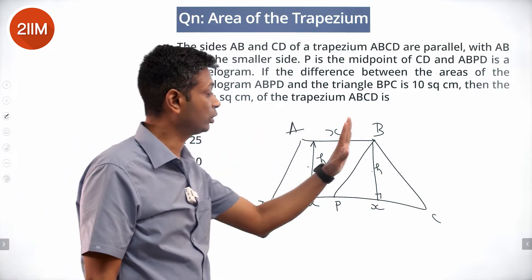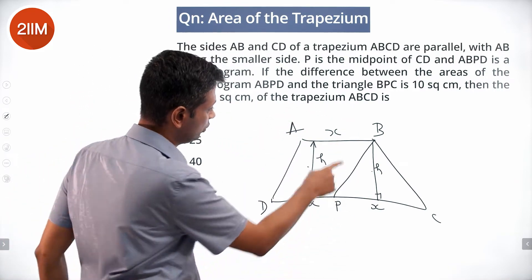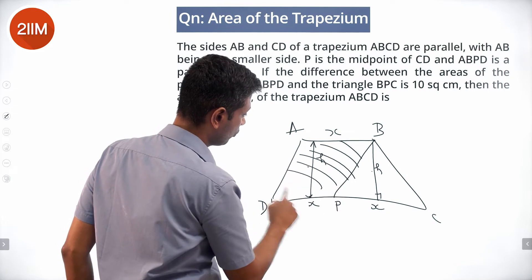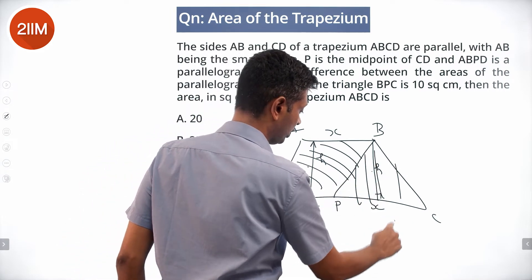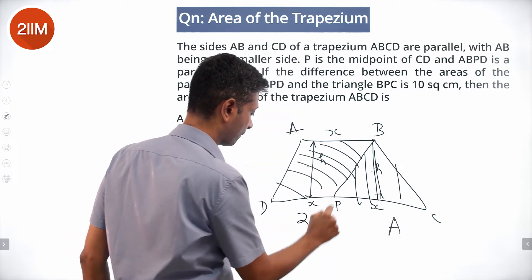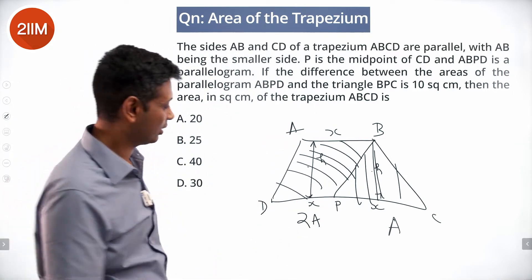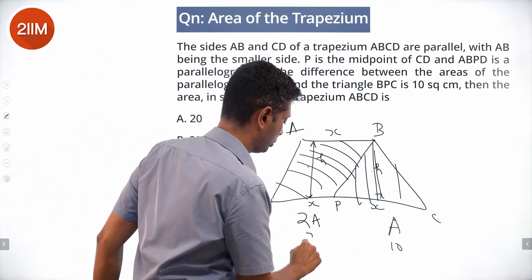The area of the parallelogram will be two times the area of the triangle. If this area is a, then this area is 2a. The difference is 10, so a equals 10, which means this is 20.